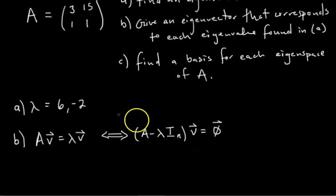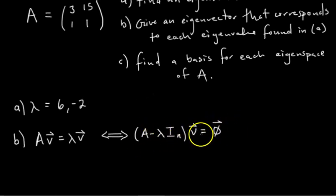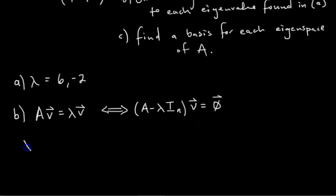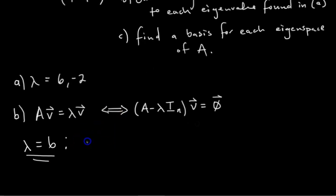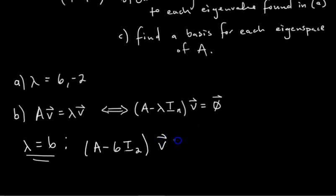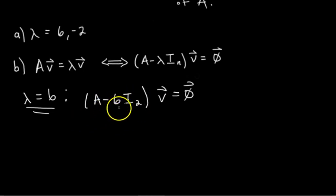To do that, we plug in and get the matrix A minus lambda I_n, then that matrix times V equals 0, and we know how to find solutions to the homogeneous equation. We're going to break it up. First, we find the eigenvector corresponding to the eigenvalue equal to 6 — so this is for lambda equals 6 — and we set up A minus 6 times I₂ times V equals 0. So what is A minus 6I₂?